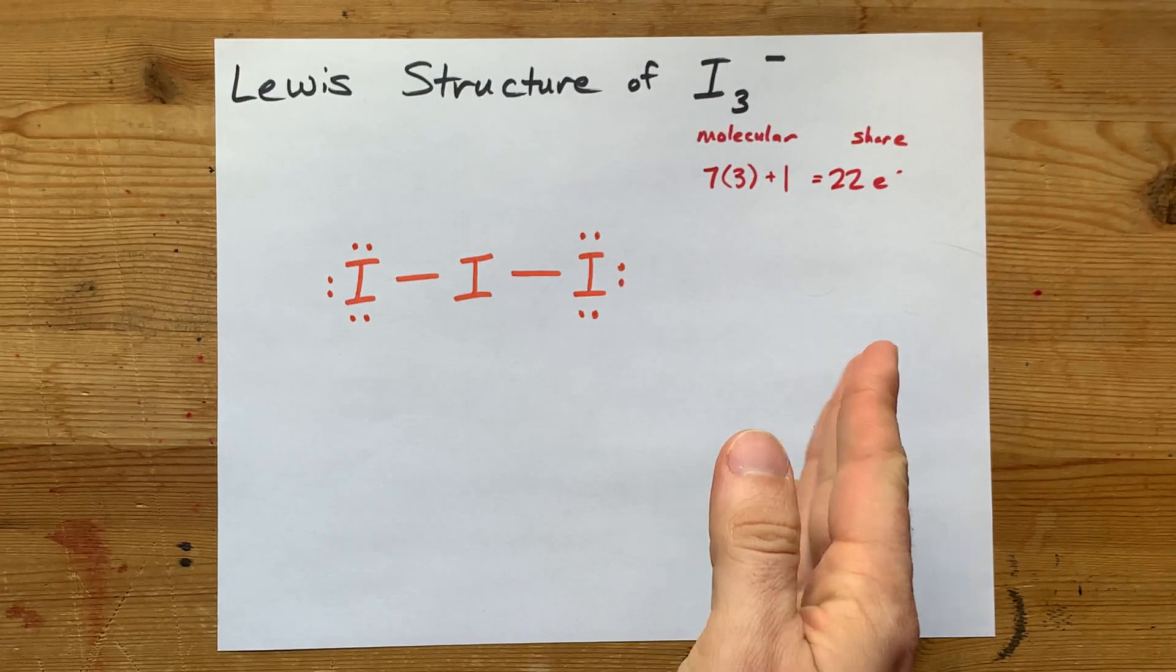The octet rule says that nonmetals want eight electrons in their outer shell to be happy. This iodine is now happy and stable because it has two, four, six, eight electrons surrounding it, and this iodine is happy for the same reason. This guy is not happy yet, but we're not done.